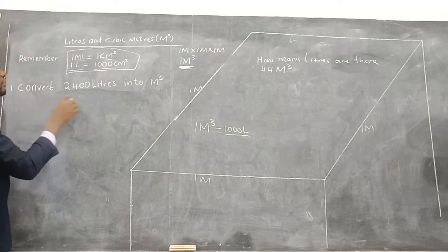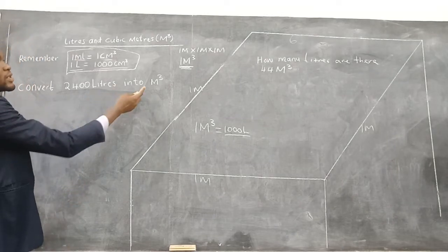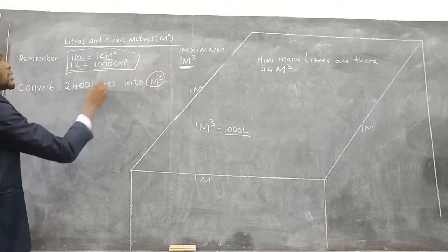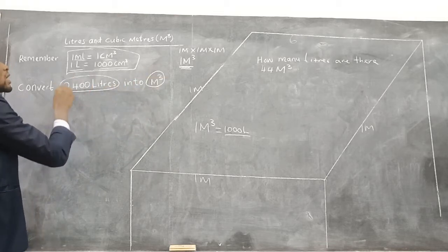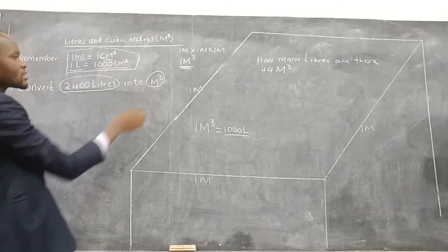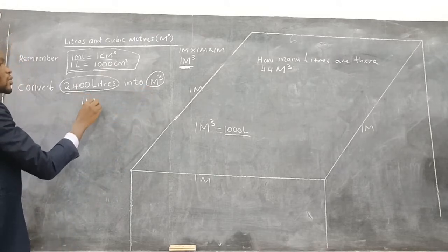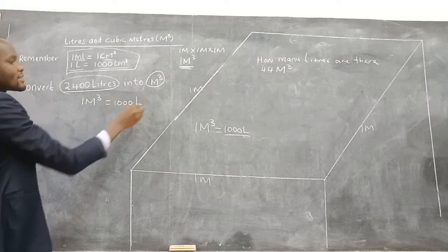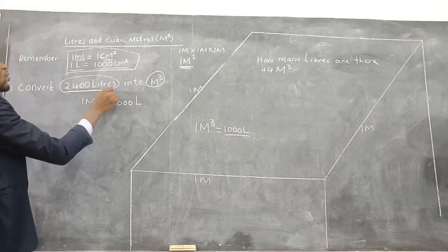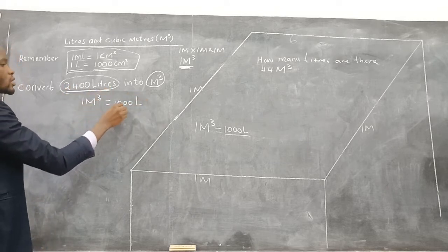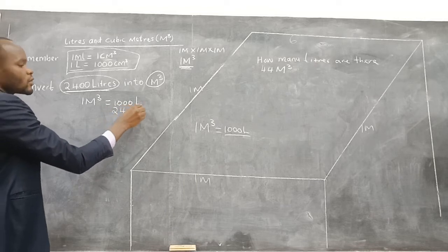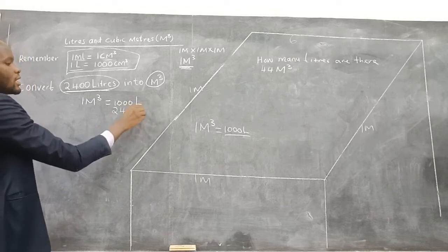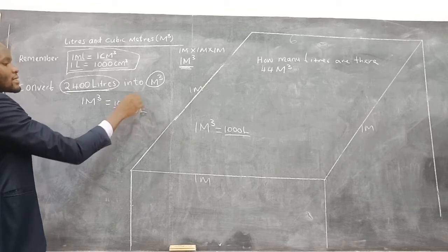We can use examples. Convert 2,400 liters into meters cubed. We have two units involved: 2,400 liters and meters cubed. 1 meter cubed will stand alone to balance with 1,000 liters. Then you say, what about 2,400? You write where we have 2,400 liters.